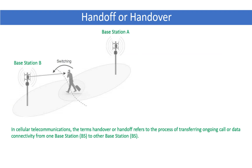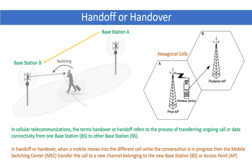In cellular telecommunication, the term handoff refers to the process of transferring an ongoing call or data connectivity from one base station to another. The diagram shows that the person is going from base station A to base station B and switching is going on. In handoff, when a mobile moves into a different cell while the conversation is in process, then MSC transfers the call to a new channel belonging to the new base station or access point.